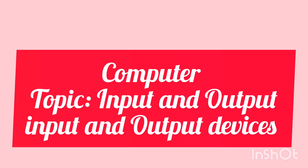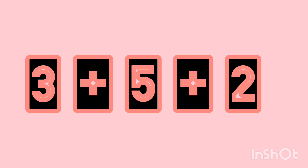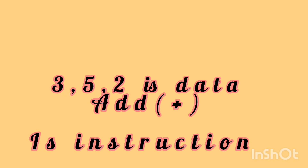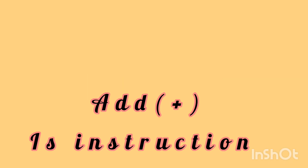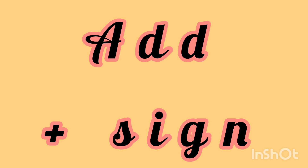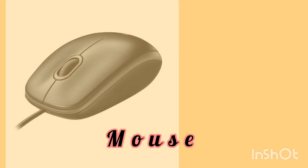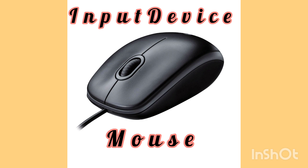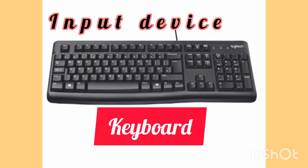Assalamu alaikum kids, today's topic is about computer input and output devices. In this example, 3 plus 5 plus 2 — the numbers 3, 5, and 2 are data, and addition is the instruction. We input data with the help of a mouse. Mouse is an input device, and keyboard is also an input device.